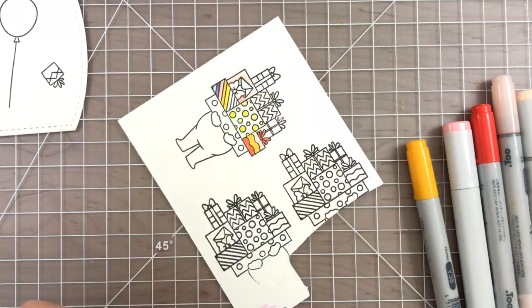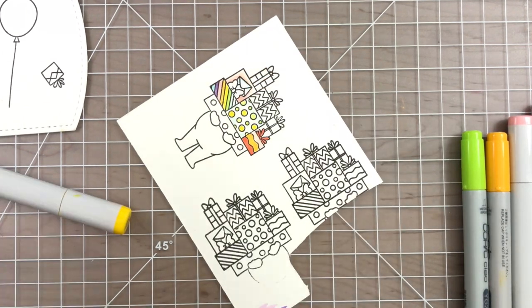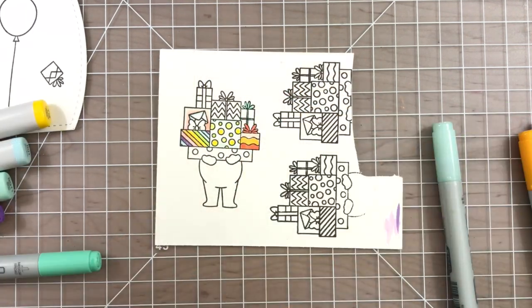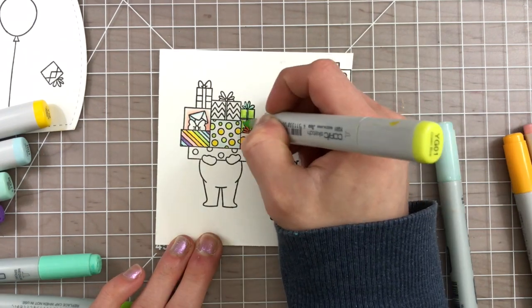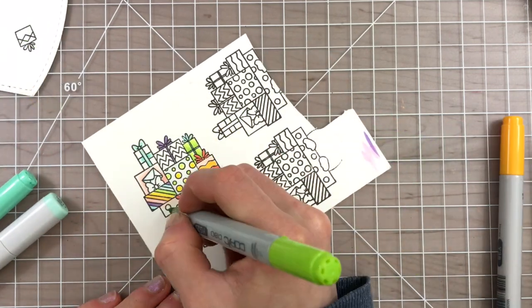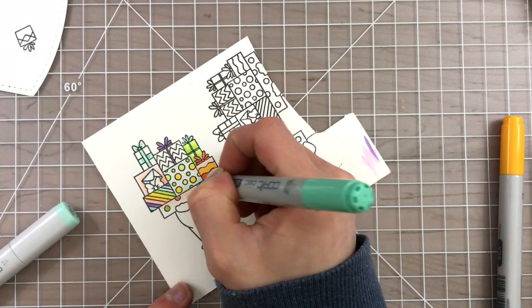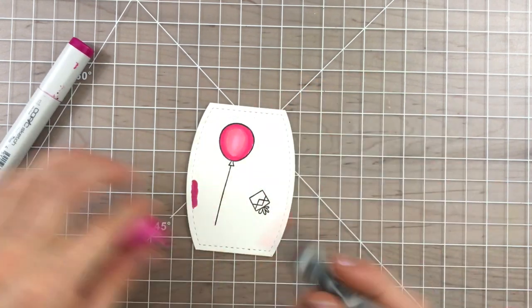Now when I did the shading on these presents I didn't get too crazy with the shading because there's very tiny detailed areas within these stamped images. So I'm going as much as two Copic colors to shade a certain area. I didn't go any more than two colors just to keep the coloring simple and not have to worry about bleeding outside the lines and getting too saturated with color.